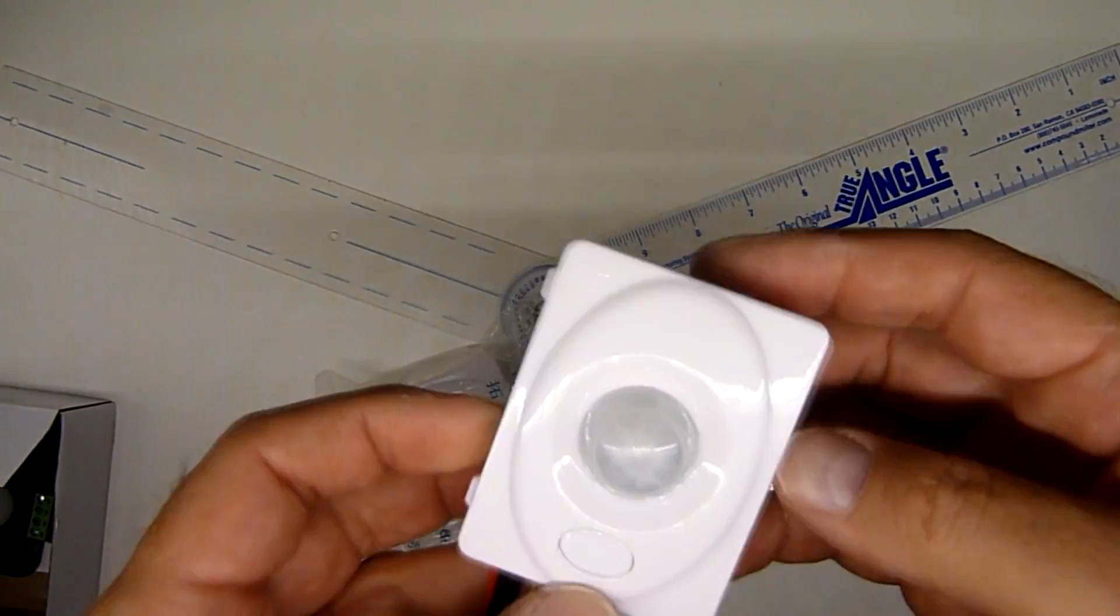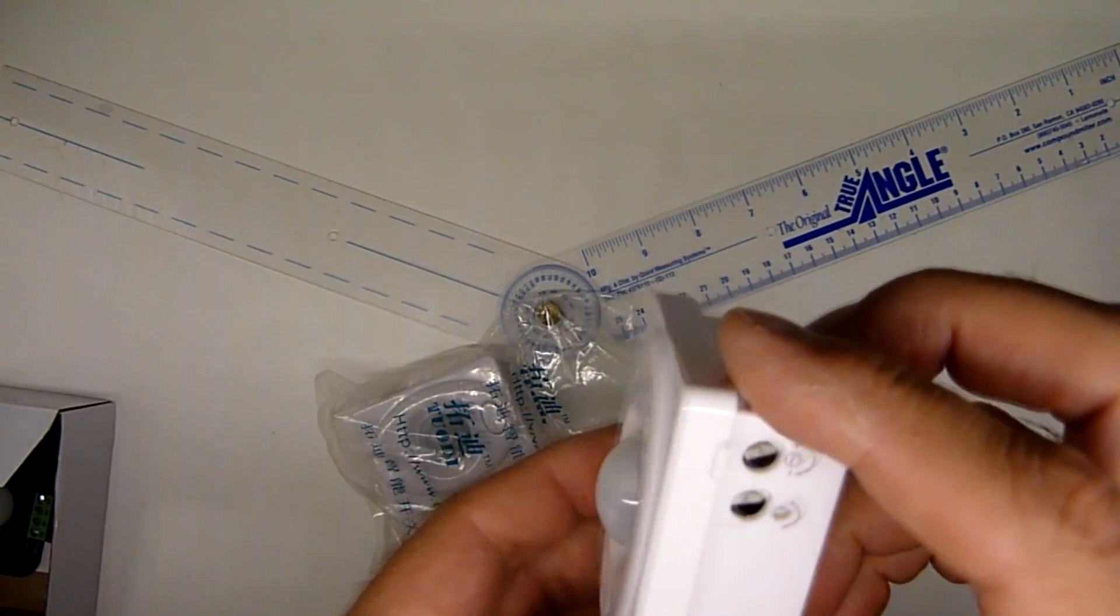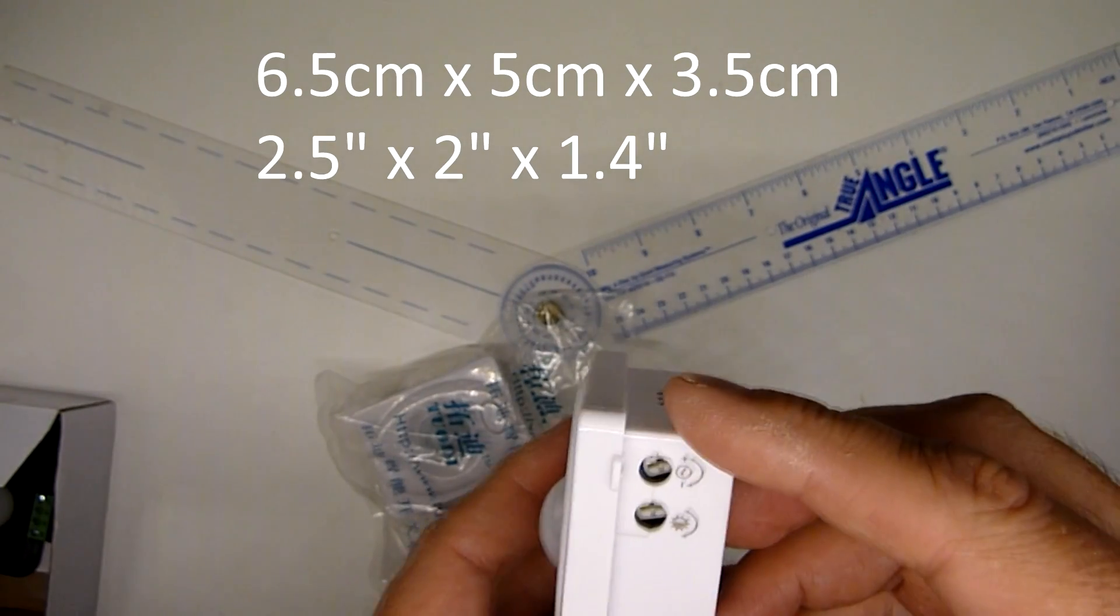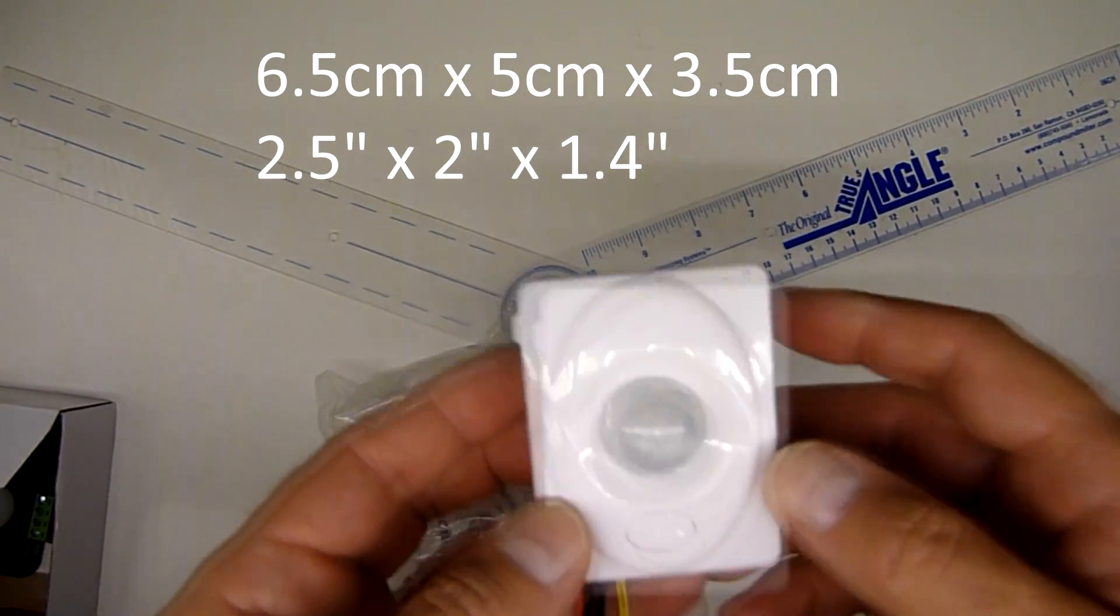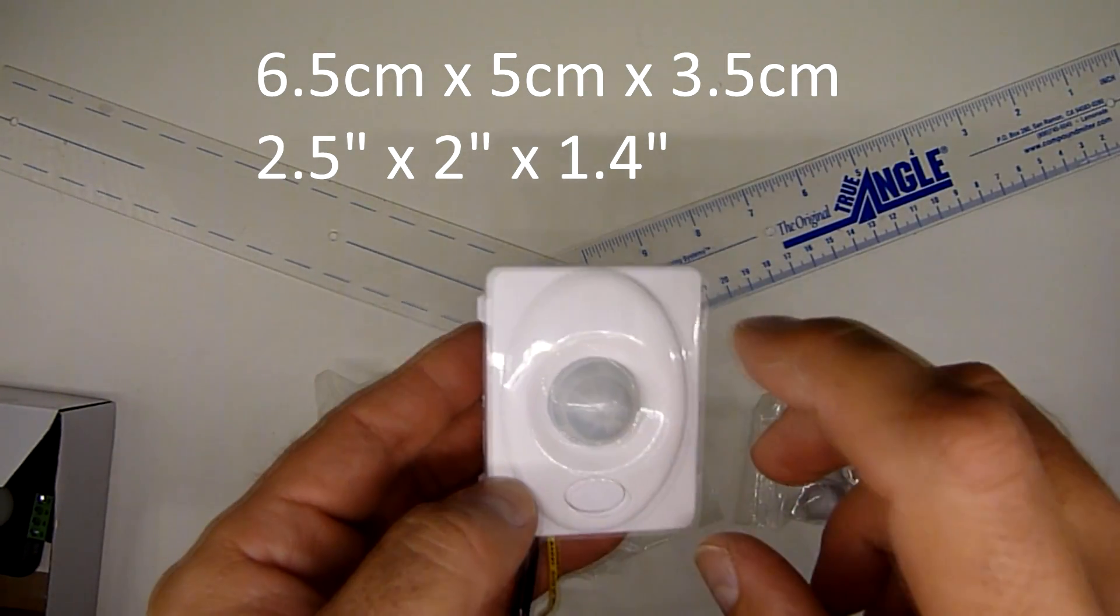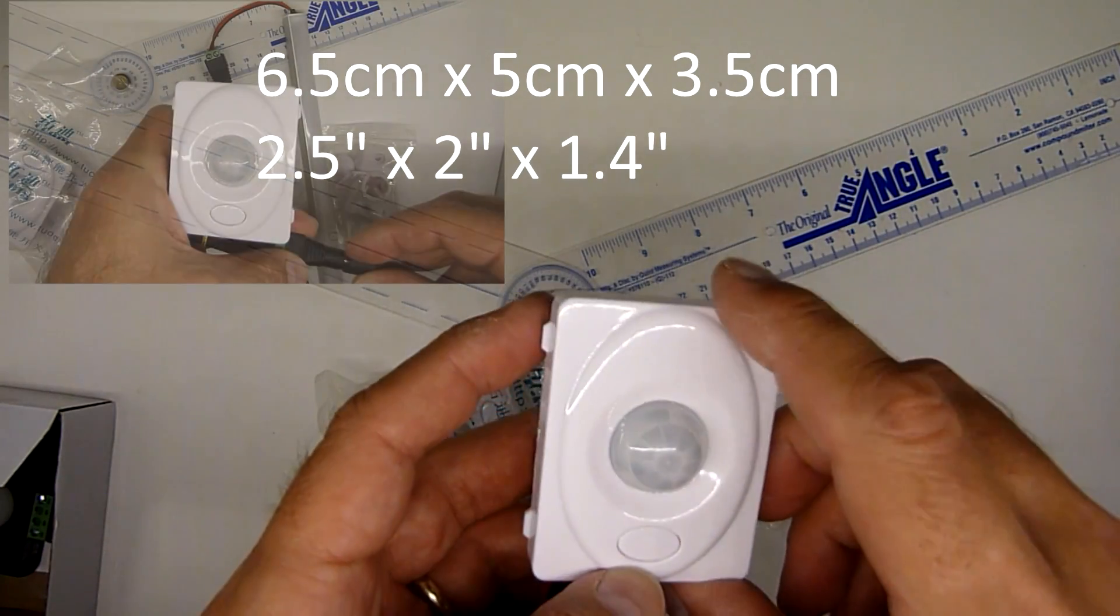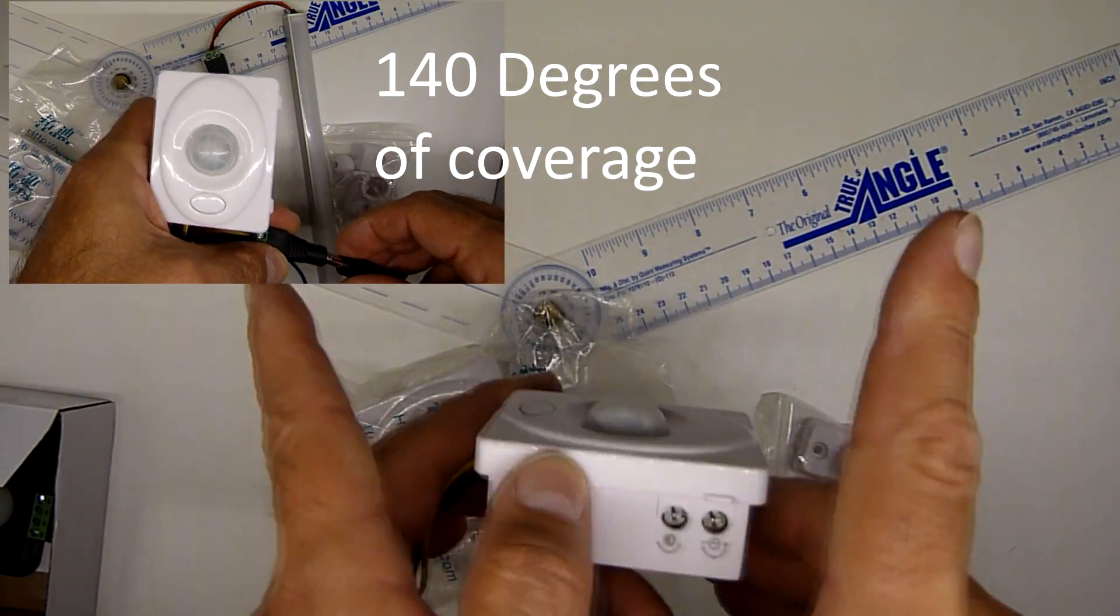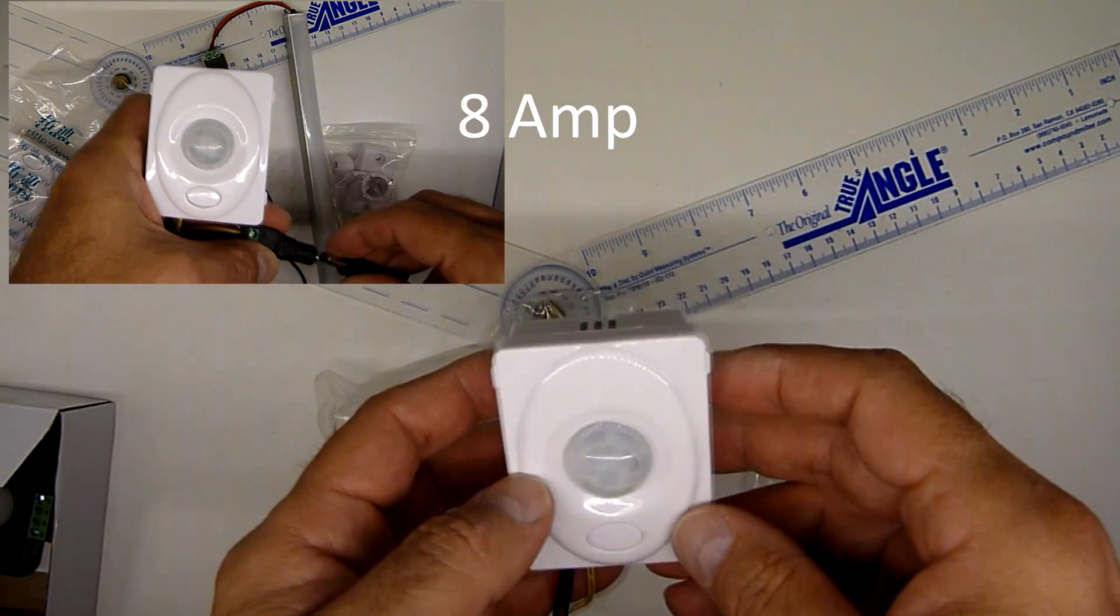The next unit is this white one. It's definitely the largest of the indoor ones. It's 2.5 by 2 inches by about 1.4. One big difference with this one is it does make an audible click when it activates. It has 140 degrees of coverage, so it's a little bit more coverage than the other. It's also rated to 8 amps.